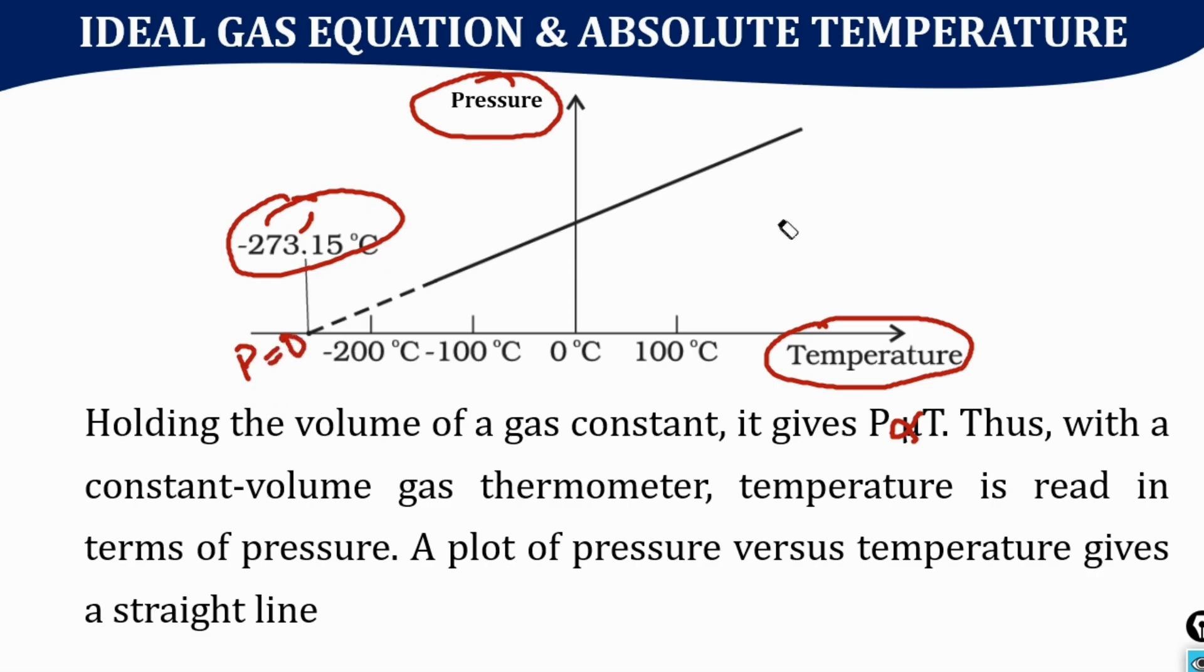Therefore, we can define the absolute zero temperature as the temperature at which the pressure or volume of a given mass of gas will become zero. This is the minimum possible temperature attainable.